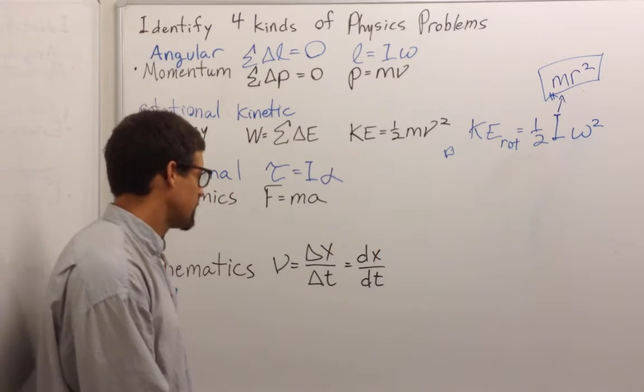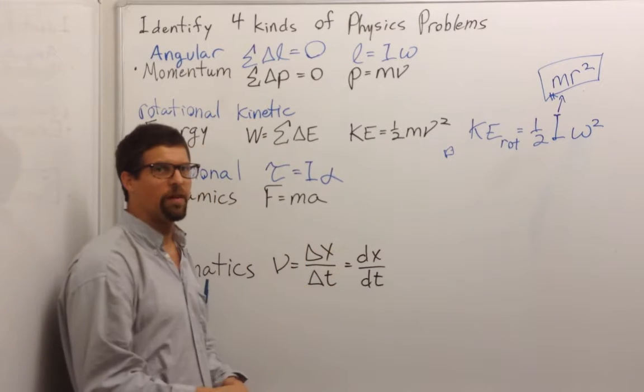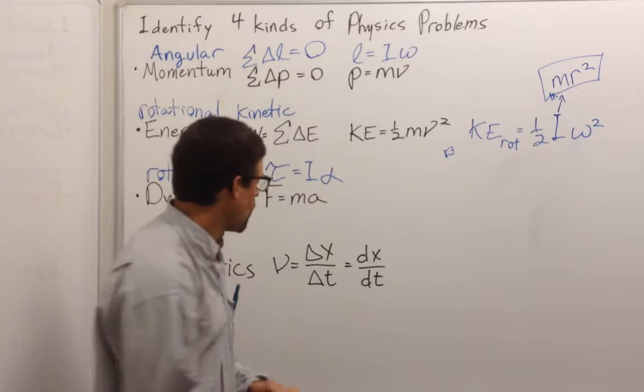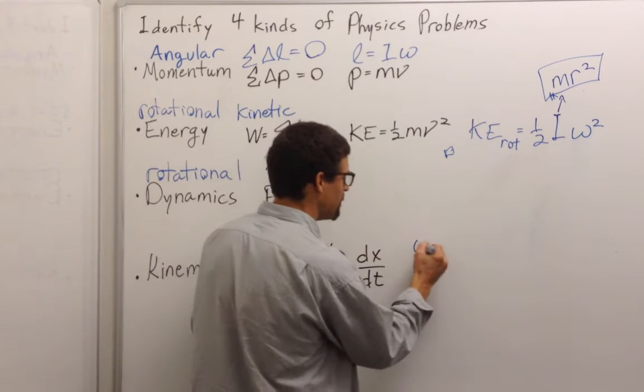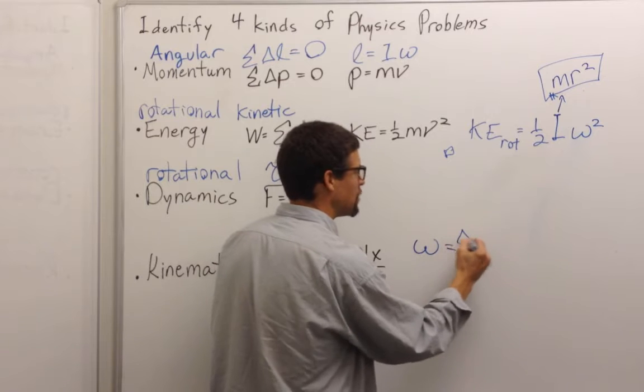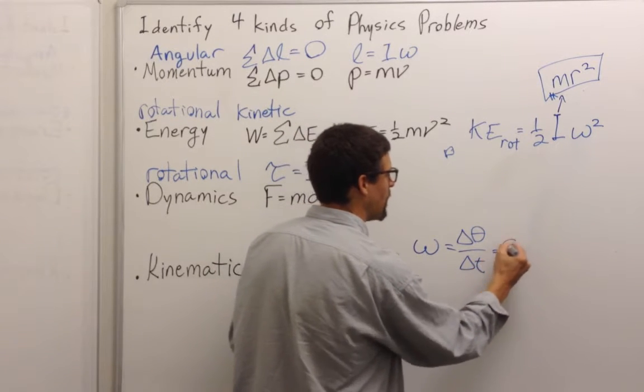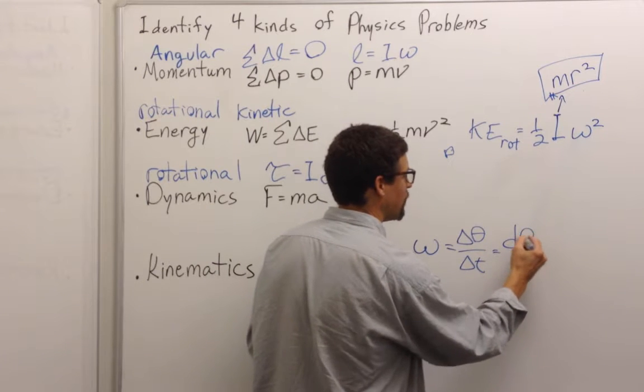And lastly, we have kinematics. Velocity, how fast something is moving, is the rate of change of displacement. And so what we have is omega, how fast something is rotating, is equal to the change in angle over change in time or the time rate of change of theta.